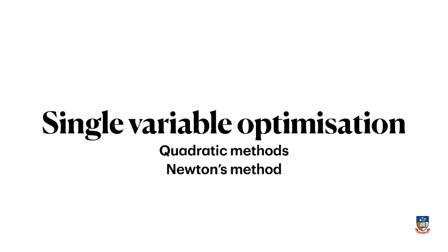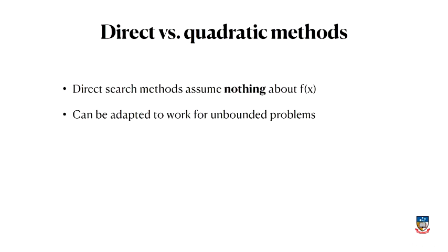Let's change gears a little bit and talk about something new. We've spent a lot of time talking about direct search methods. We'll now talk about something a little bit more mathematical in quadratic methods. We approximate the function with a quadratic and that will lead us to something very famous that you will have seen before in Newton's method.